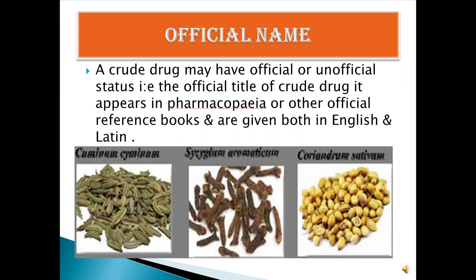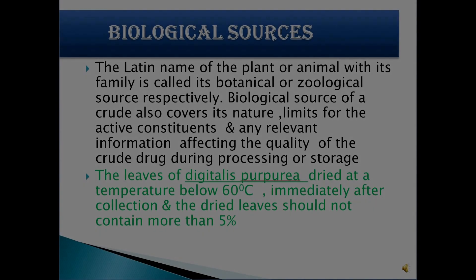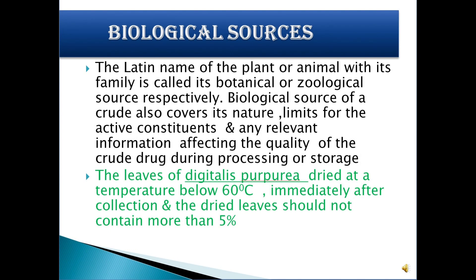First, you have to see the official name. Crude drugs may have official or unofficial status. The official status of crude drug means it appears in pharmacopoeia or other official reference books, in English language or Latin language. Biological sources — the Latin name of the plant or animal with its family is called the botanical or zoological source. Biological source of crude drugs also covers its nature and limits for the active constituents and any relevant information affecting the quality of the crude drugs.